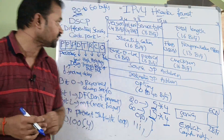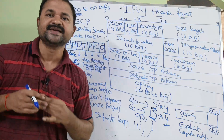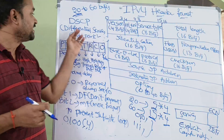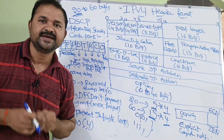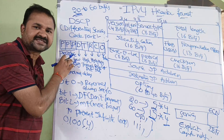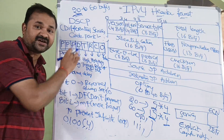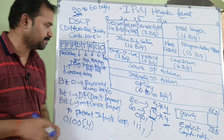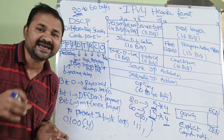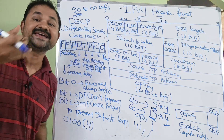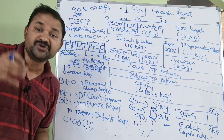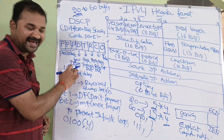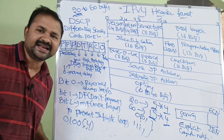And the next one is service type, which is of size 8 bits. This can also be called as DSCP — Differential Services Code Point. Here we have 8 bits. The first 3 bits specify precedence. D stands for delay — low delay. T stands for throughput — high throughput. R stands for reliability — high reliability. C stands for cost — high cost. The last bit is used for future use and is always set to 0.